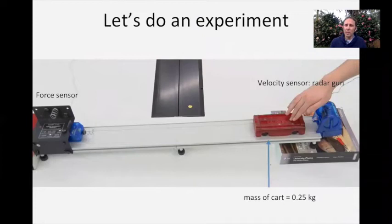Let's do an experiment in order to test this relationship in the lab. Here's our setup. We have a cart which has a mass of 0.25 kilograms on an inclined plane. We will measure the speed of this cart as it travels slowly down the inclined plane with a radar gun. The radar gun will measure the velocity of the cart. That's on the right hand side.